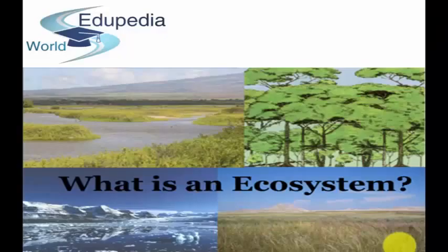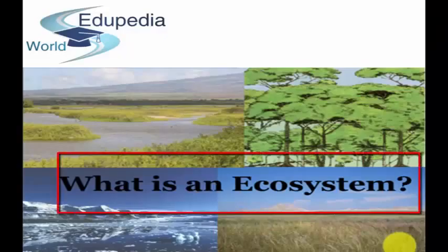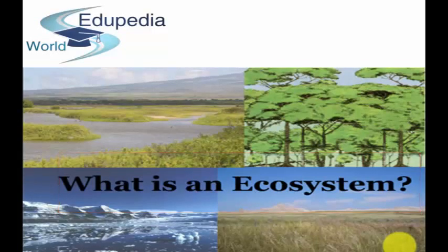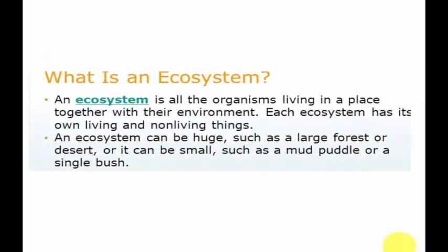Welcome to edupediaworld.com. In today's video we are going to learn about ecosystem. So what is ecosystem? Ecosystem is the environment around us. The environment is very vast and it consists of a lot of living as well as non-living organisms, certain gases, and other substances which are organic and inorganic. So all of this together constitutes the ecosystem.